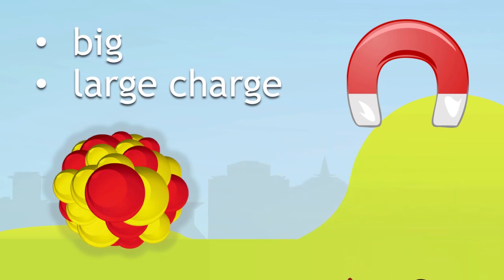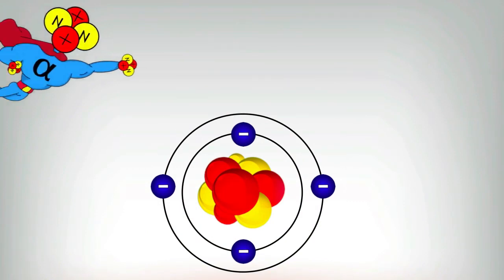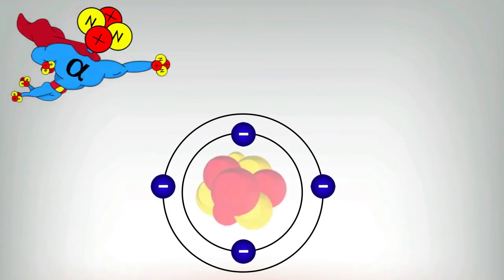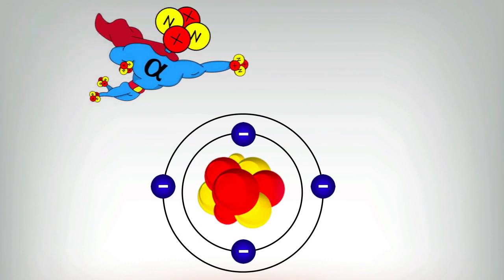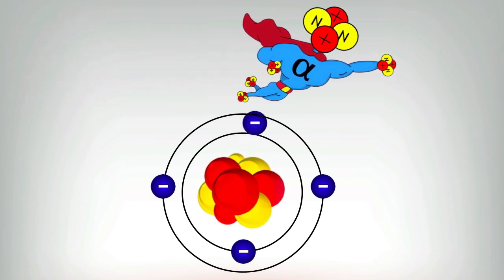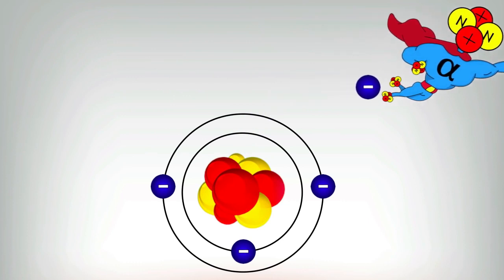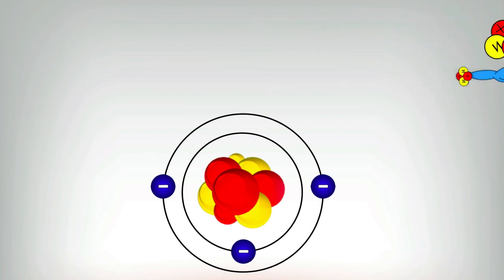If it comes across another atom, it's pretty likely to take an electron with it. Here's the alpha particle, here's an atom. The alpha particle comes across it, and as it gets near, it starts to make it wobble a bit. As it comes away, it pulls off an electron with it. This makes it very, very ionizing.